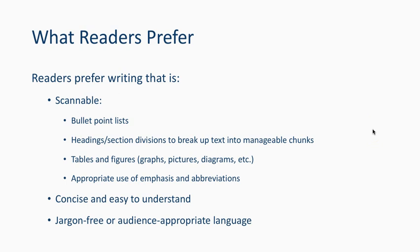At the center of plain language are reader preferences. Readers prefer writing that is scannable, concise, and jargon-free. Scannable means they can jump in and out of the text and find what they need quickly. In academic writing, instructors typically read the whole document. But with technical writing, readers have no obligation — they will skip things, and that's okay. You can't assume they'll read everything.